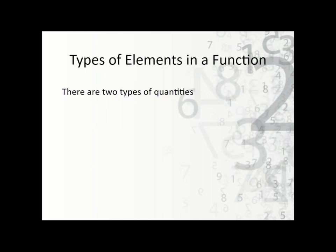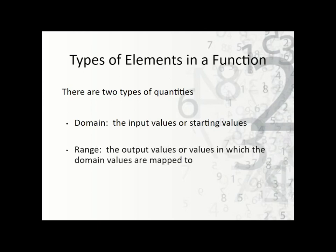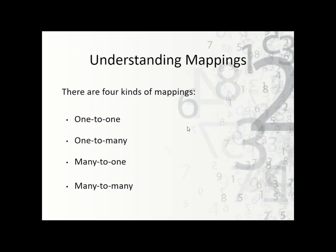Just a reminder: there are two types of elements of a function. The first is the domain, which represents the input or starting values, and the range represents the output values — the things that the domain is mapped to. Within that, there are four different kinds of mappings: one-to-one, one-to-many, many-to-one, and many-to-many.